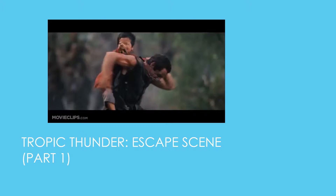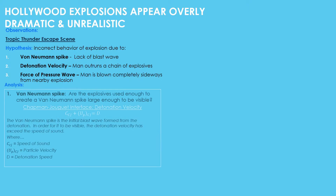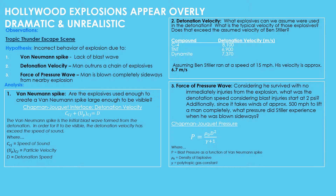After seeing the explosion, we wanted to analyze exactly how much of the physics involved were true to real-world conditions. Upon watching the previous scene several times, we hypothesized that the explosions exhibited incorrect behavior for the following reasons: 1. The Van Neumann Spike, due to the lack of a visible blast wave. 2. Detonation velocity, where a man is able to outrun a chain of explosions. 3. Force of the pressure wave, where a full adult man is blown completely sideways from a nearby explosion.